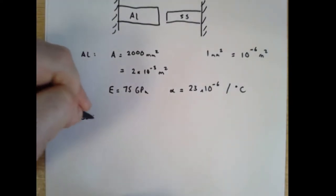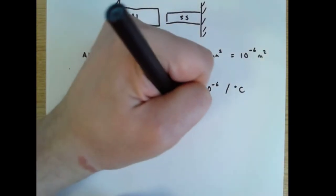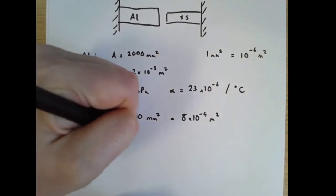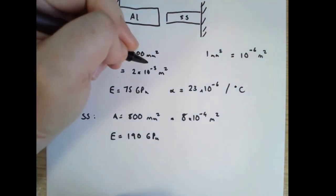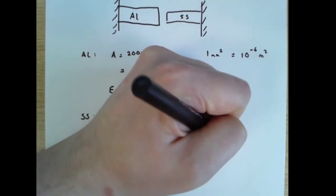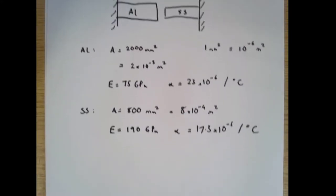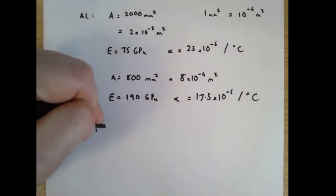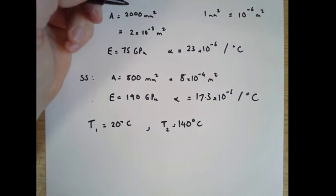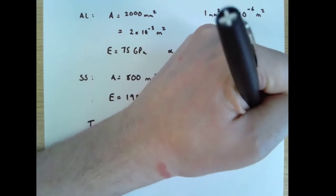The thermal expansion coefficient for aluminium is 23 times 10 to the minus 6 strain per degree C. For stainless steel, the area is 800 square millimetres, which equals 8 times 10 to the minus 4 square metres. Young's modulus is 190 gigapascals. The thermal expansion coefficient is 17.3 times 10 to the minus 6 per degree C. Temperature 1 is 20 degrees C, temperature 2 is 140 degrees C, so the total temperature difference delta T is 120 degrees C.